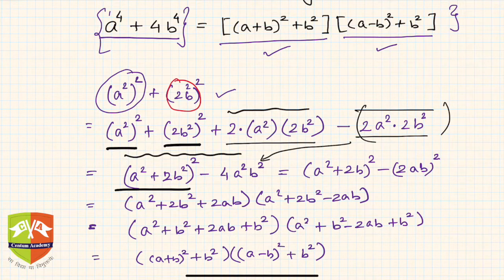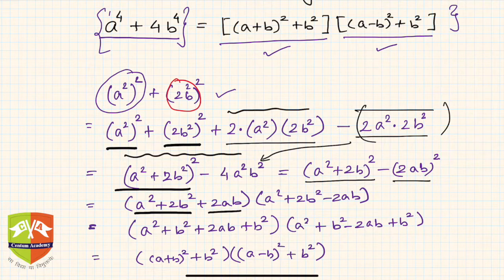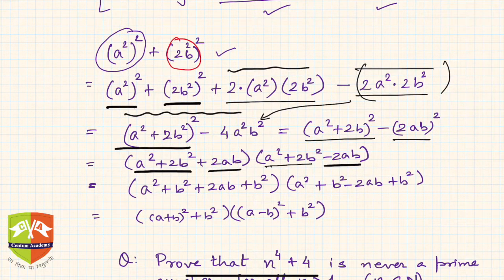The remaining term is reduced to 4a squared b squared. So the whole expression is now in the form of a squared minus b squared, isn't it? Hence we can deploy the identity a squared minus b squared equals (a plus b)(a minus b), giving us (a squared plus 2b squared plus 2ab) times (a squared plus 2b squared minus 2ab).